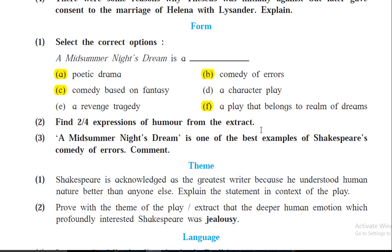Find two to four expressions of humor: there is a lot of confusion — the love potion is put in the wrong person's eyes and so on. Just go through the text and write down two, three, or four expressions of humor. A Midsummer Night's Dream is one of the best examples of Shakespeare's comedy of errors — because there is a lot of confusion, with one person falling in love with another, getting attracted to the wrong person, and so on.